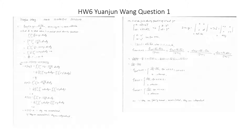The second question asks are X and Y uncorrelated, and the third question asks are they independent. The correlation is equal to E[XY] minus E[X] times E[Y].